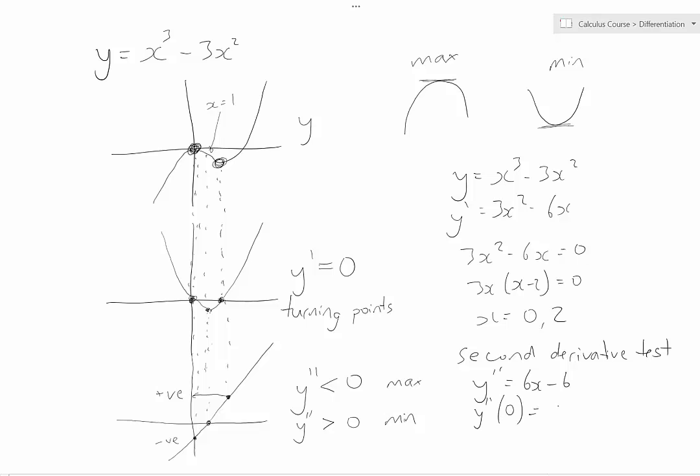So if I substitute zero into here, I'm going to get 6 lots of zero minus 6, which is negative 6. Now that value there, you can see, is less than zero, therefore it must be a maximum.